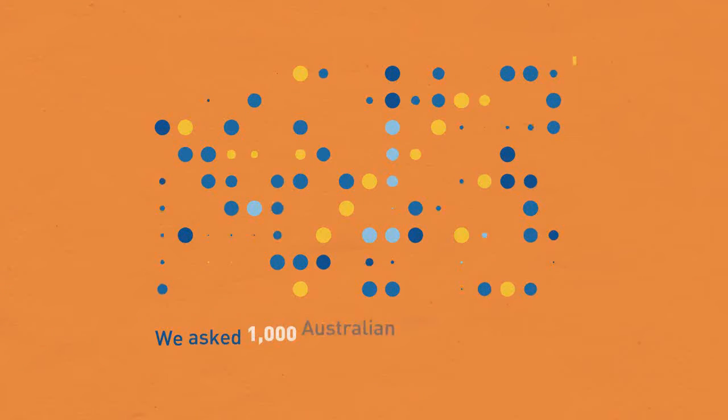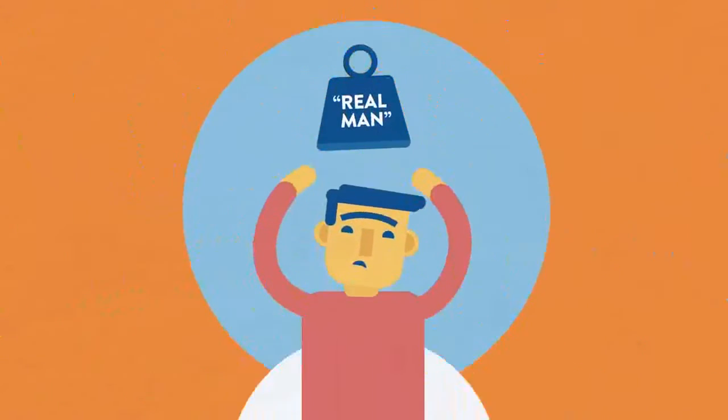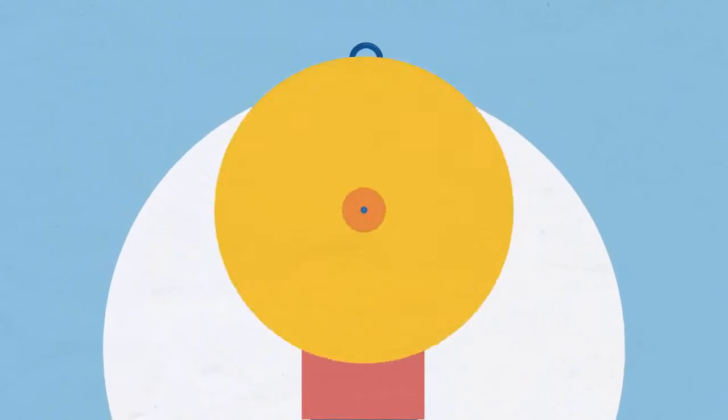The Men's Project asked 1,000 Australian men aged 18 to 30 about the pressures to be a real man: the pressure to be tough, to be the breadwinner.